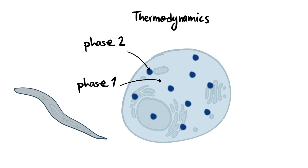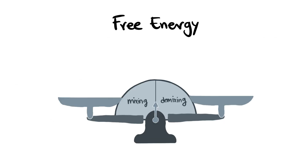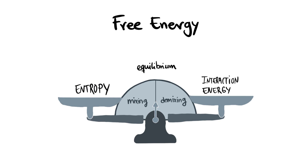Thermodynamic systems are described by a free energy. The free energy of a thermodynamic system reflects a competition between entropy and interaction energy, the outcome of which is the equilibrium state of the system.